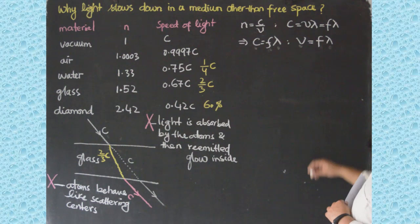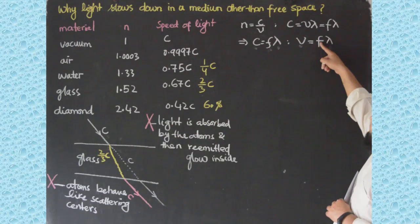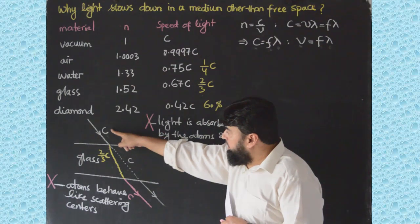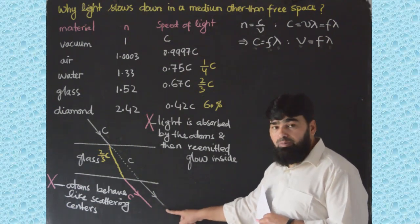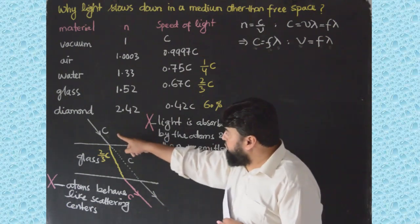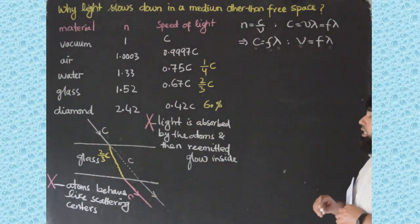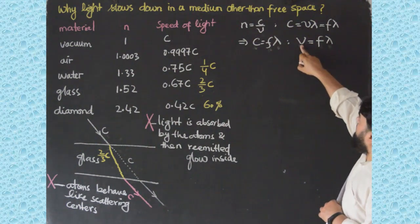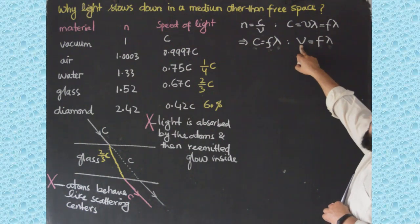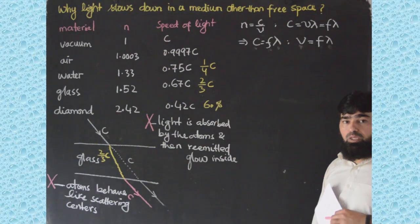Frequency is the number of cycles per unit time. From the continuity equation, the number of cycles entering the material per unit time must equal the number leaving. So due to continuity, the frequency remains constant inside the material. Therefore it is the wavelength that changes — the wavelength is actually reduced inside the medium.